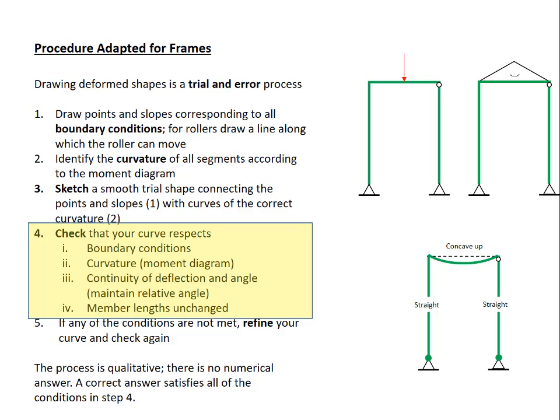Let's run through the checks together. Boundary conditions, the deformed shape goes through the dots that we drew earlier. That's correct. The curvature, the beam is concave up, the other two members are straight. That's correct. Continuity of deflection and angle.